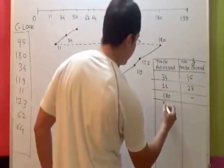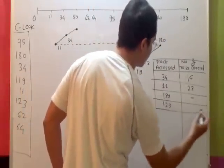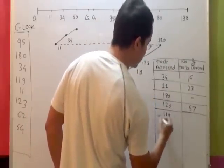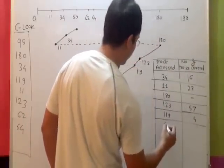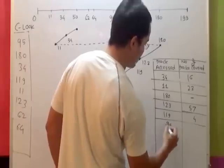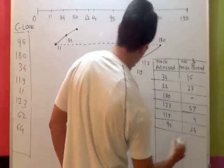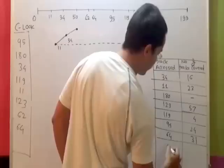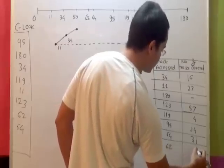From 180 we went to 123, 57. From 123 we went to 119, that was 4. From 119 we went to 95, that is 24. From 95 we went to 64, that is 31. From 64 to 62, that is 2.